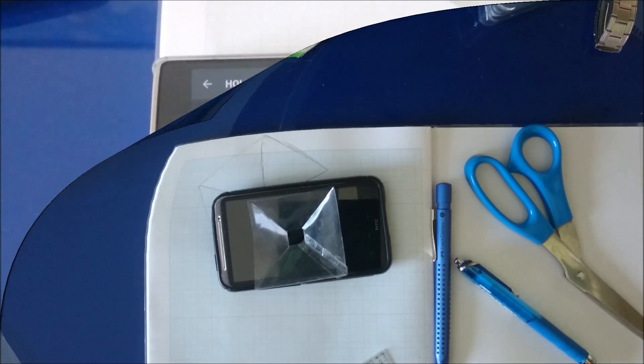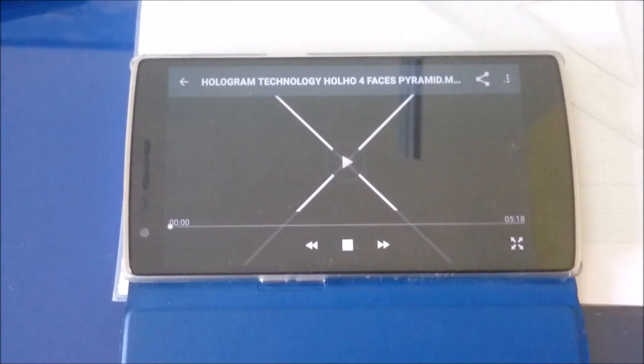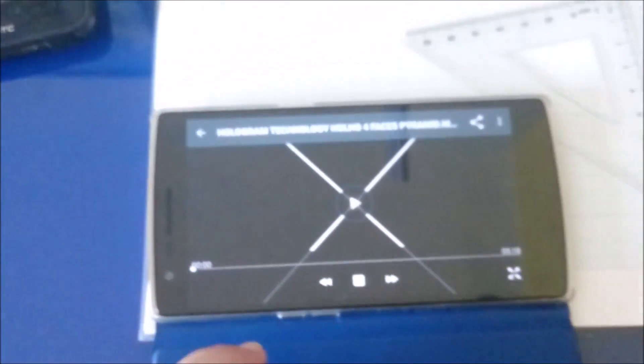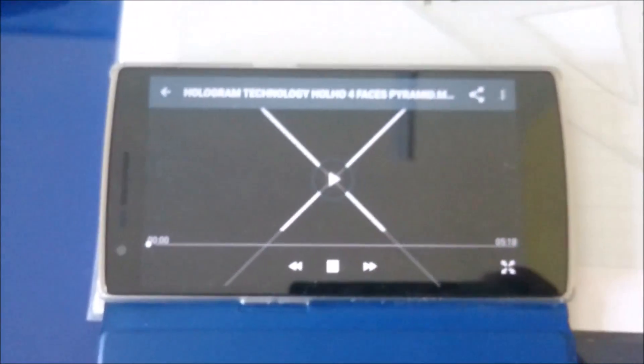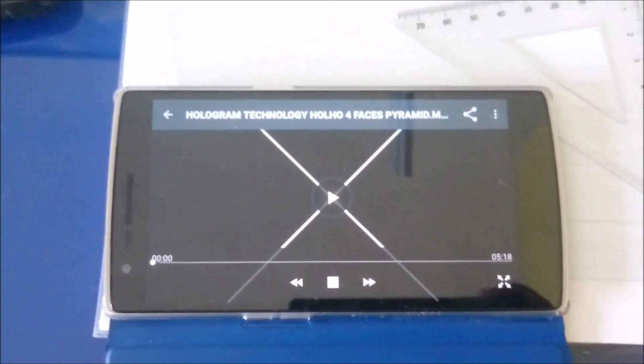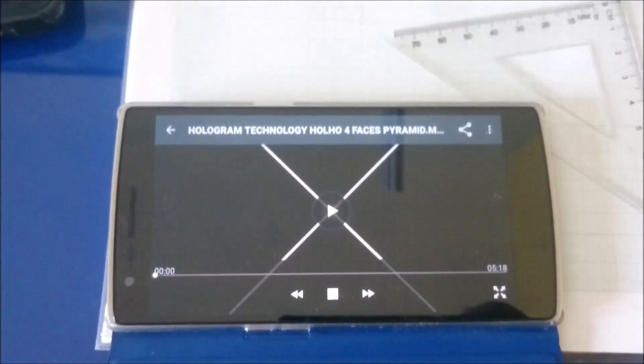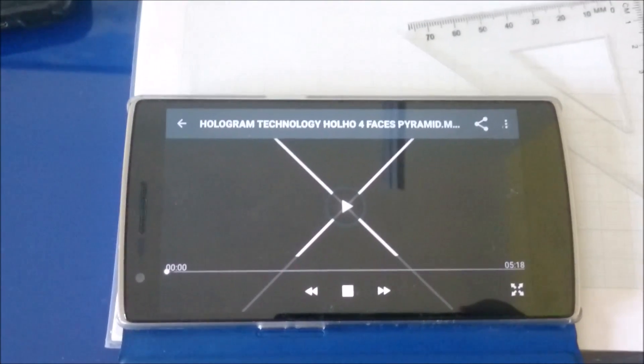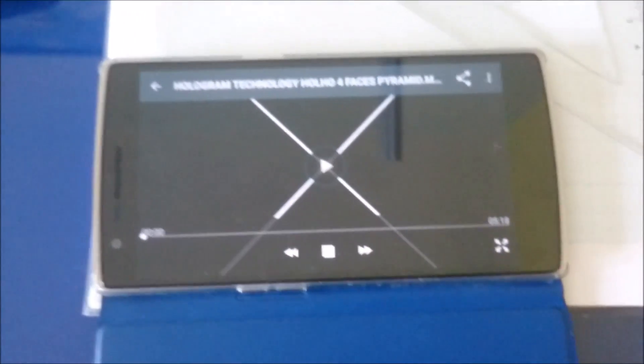Before I actually show you what this looks like, let me first show you how to use it. First of all, you need to open up your phone and load up a video that is four-face—that's a four-face hologram. You can search 'four-face hologram' on YouTube and it will bring up a lot of videos.